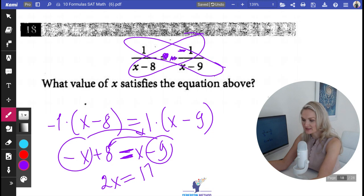Eight plus nine, last time I checked was 17. x is equal to 17 over two.